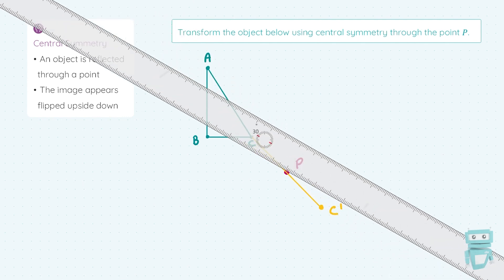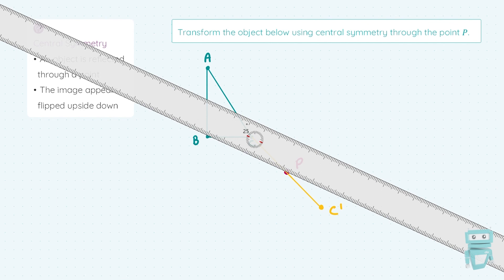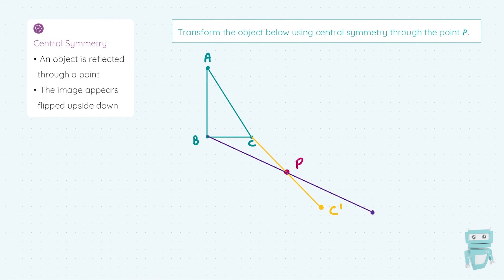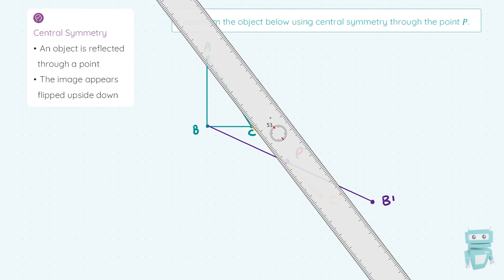I'm going to go ahead and do the same for the point B. I'm going to match up point B and point P using my ruler, then measure the distance from B to P: 1, 2, 3, 4, 5 and a half centimetres. So I'm going to come out 5 and a half centimetres the other side. That equal distance of 5 and a half centimetres the other side of P is where the translated point B is going to be. I'm going to call that B prime.